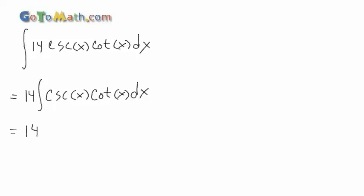Rewriting the 14. And the integral of cosecant X, cotan X is just going to be... It's negative, so let's bring that negative out front here. Negative cosecant X plus C.